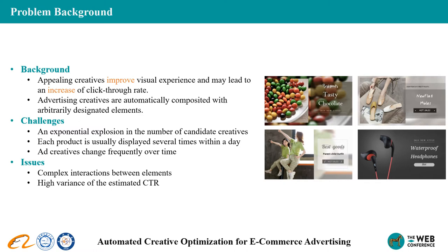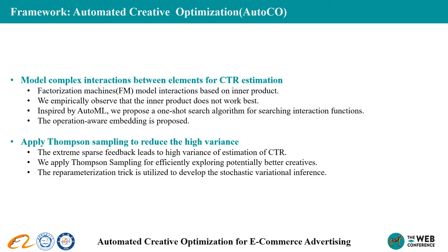It is possible to apply simple modules such as factorization machines to predict the CTR of the creatives. However, interactions between elements may be more complex than the inner product. Moreover, the estimated CTR is of high variance due to extremely sparse feedback. To address these two issues, we propose an automated creative optimization framework to model complex interactions between elements of the creative and to strike a balance between exploration and exploitation. The whole framework consists of two parts: modeling complex interactions and efficient exploration methods.